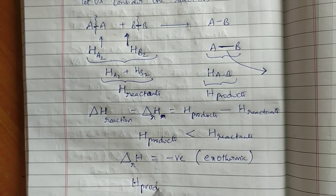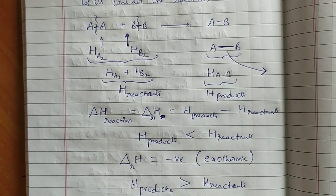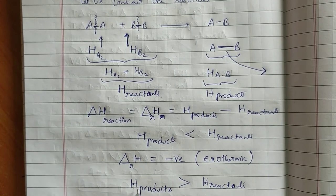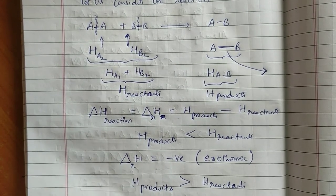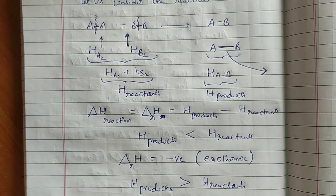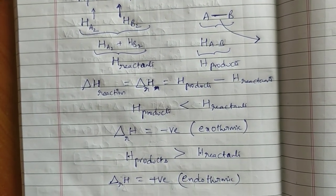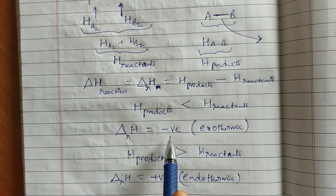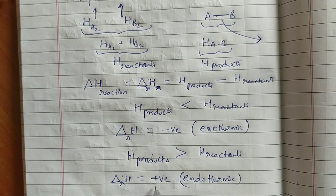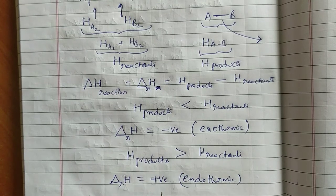If the heat energy of products is greater than the heat energy of reactants, that means energy is absorbed on the product side, so delta R H will be positive — this is called an endothermic reaction. For every endothermic reaction, delta H is positive; for every exothermic reaction, delta H is negative.